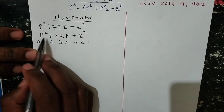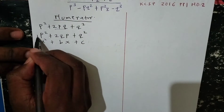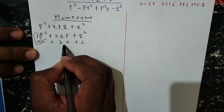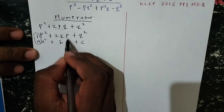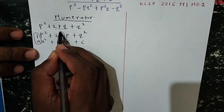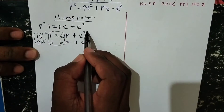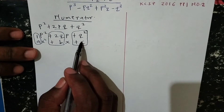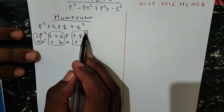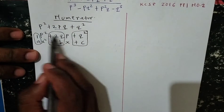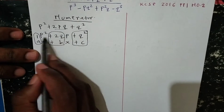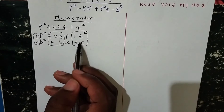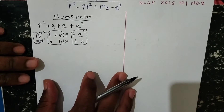Because I've chosen p to be my variable, the coefficient of p squared is 1, so my value of a is 1. The value of b is 2q because p is the variable rhyming with x. Then q squared is the value of c because it is a constant — any term without the chosen variable automatically becomes a constant.